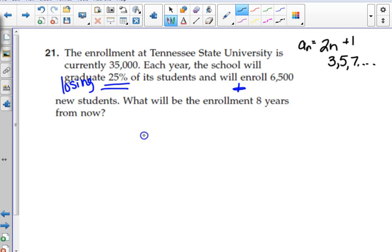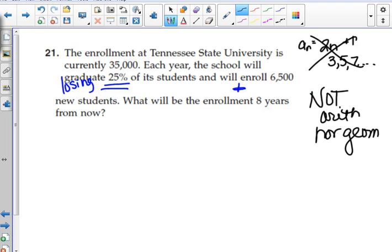So how can we write a recursive sequence so that we can put it in our calculator? First term: current enrollment. Be eight years from now. What do you think one year from now is, not 35,000, right? So I'm gonna go this is term zero. Then what did you say, Miranda?